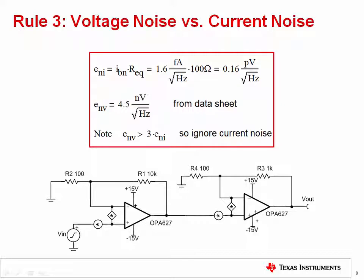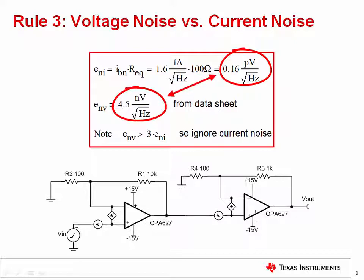Rule 3 enables us to check if op amp voltage noise or current noise is dominant. This check is done by simply multiplying the current noise by the equivalent feedback resistance. In this example, the device has a JFET input, so the current noise is very low at 1.6 femtoamps per root hertz. For current noise in this low range, it is very unlikely that current noise will be a significant contributor. However, we still do the calculation for completeness. The current noise multiplied by the equivalent resistance translates to an equivalent 0.16 picovolts per root hertz of voltage noise. This is significantly smaller than the 4.5 nanovolts per root hertz of amplifier voltage noise, so the current noise can be safely ignored. This test is usually much more important if bipolar amplifiers are used or if very large feedback or source resistances are used.